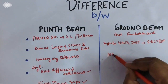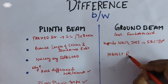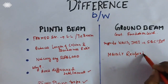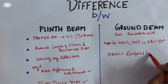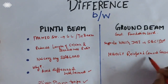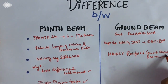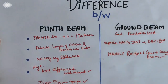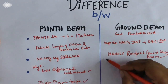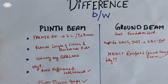The ground beam is mainly a reinforced cement concrete beam. This is a very important point. Now the next question is: why is the ground beam provided?